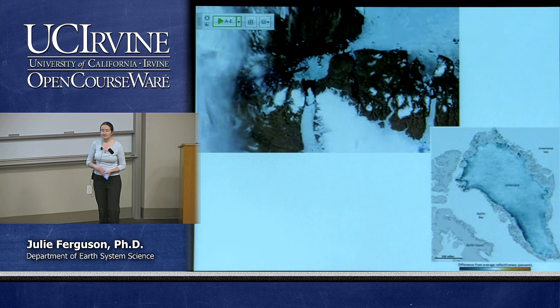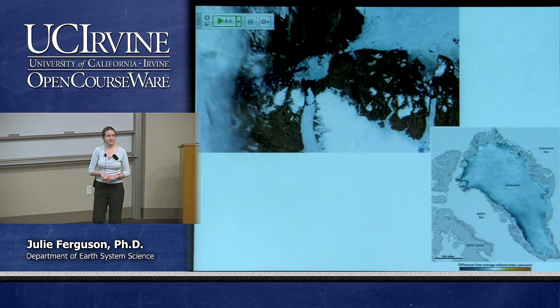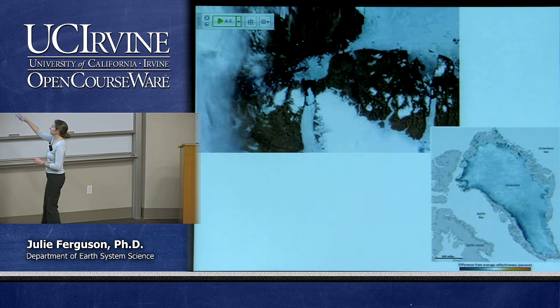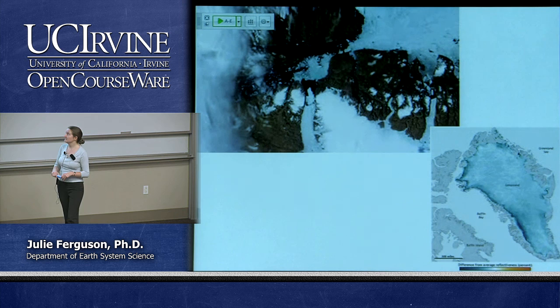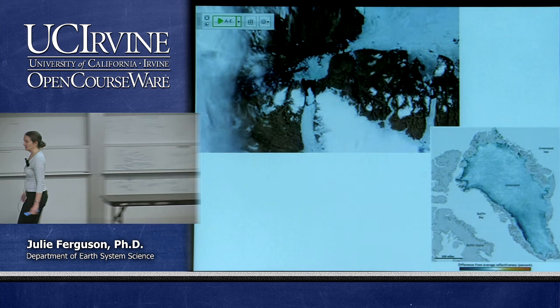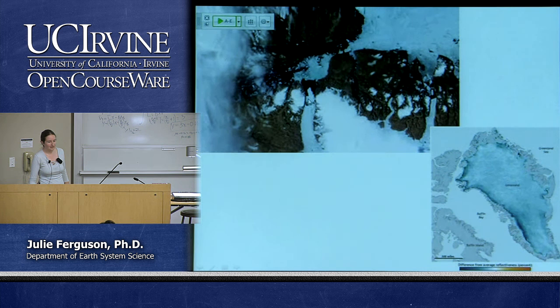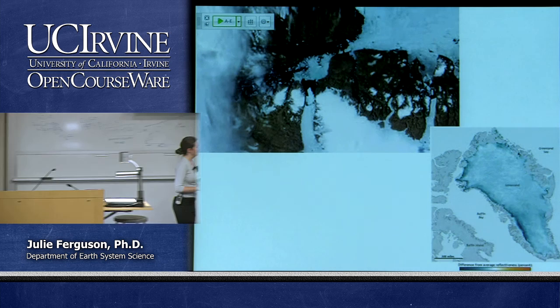Greenland is a bit different from Antarctica. It has a ring of mountains all the way around the edge, so the ice is like a dome in the middle, with the mountains keeping it in. Ice only really gets out through individual glaciers that reach the ocean — and even those produce far fewer and smaller ice shelves compared to Antarctica.